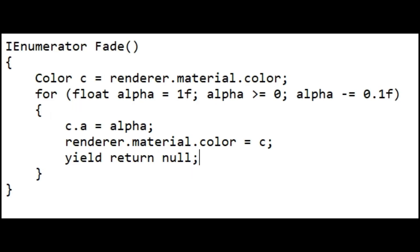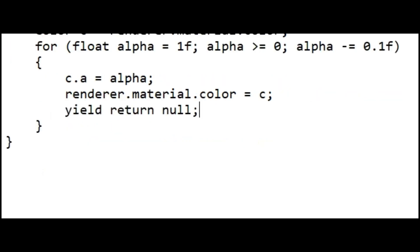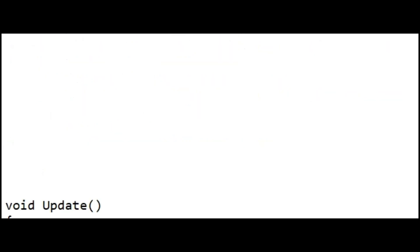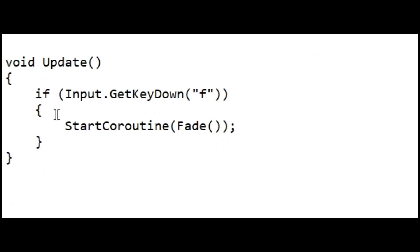To set a coroutine running, you need to use the StartCoroutine function. The loop counter in the Fade function maintains its correct value over the lifetime of the coroutine, and any variable or parameter is preserved between yield statements.